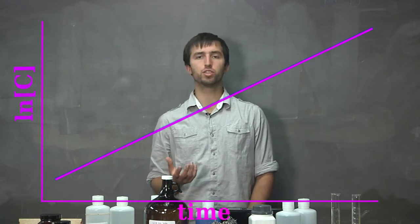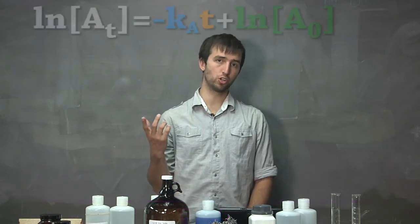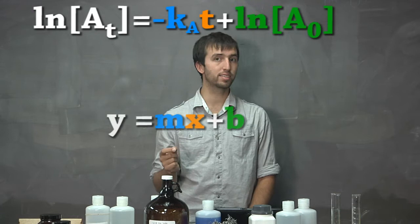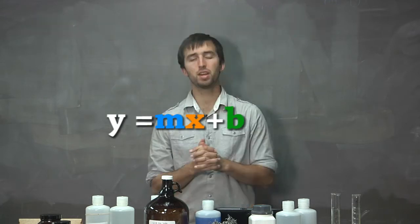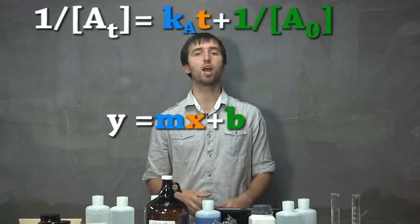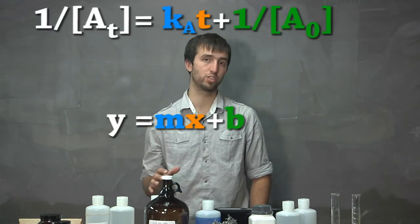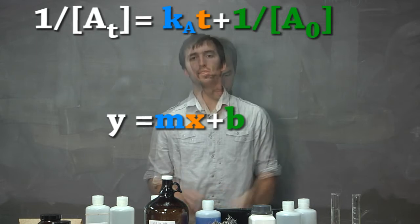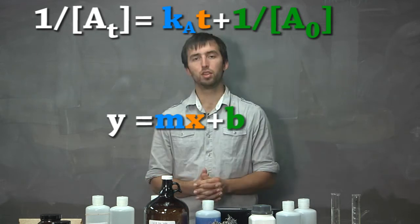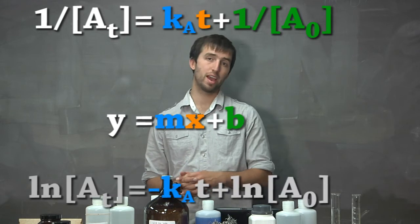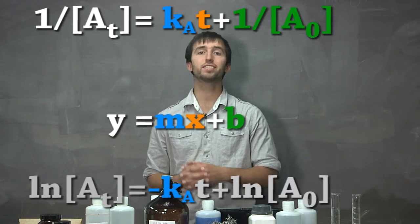The equation will result as this equation, where instead of x, like a linear equation, you have t. But if we have a second order, we must graph 1 over concentration with time. This will also give us a linear equation, but instead of having the slope be this, like the first order, it's going to be this.